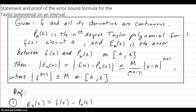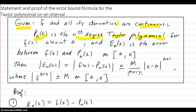Here's the statement and proof of the error bound formula for the Taylor polynomial on a given interval. Given that f and all its derivatives are continuous, and P_n(x) is the nth degree Taylor polynomial for f(x) centered at a, and e_n(x) is the error between f(x) and the nth degree Taylor polynomial on the interval from a up to x.